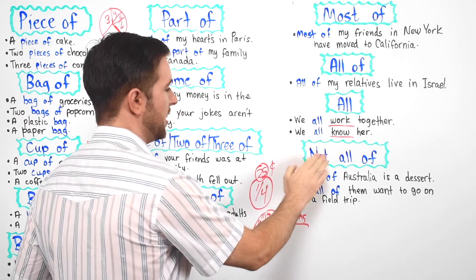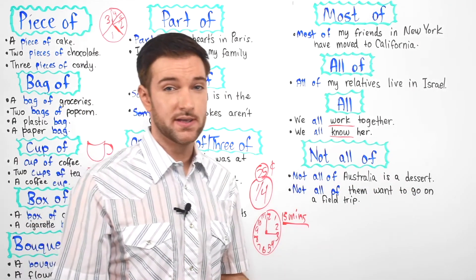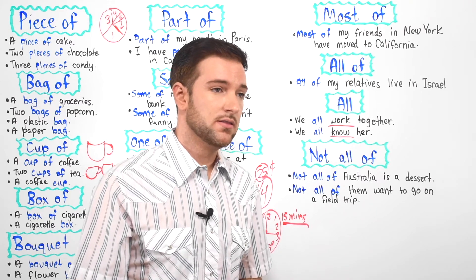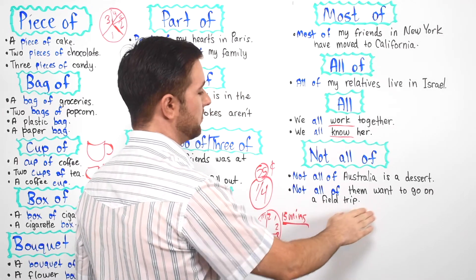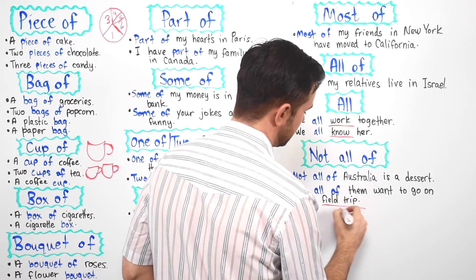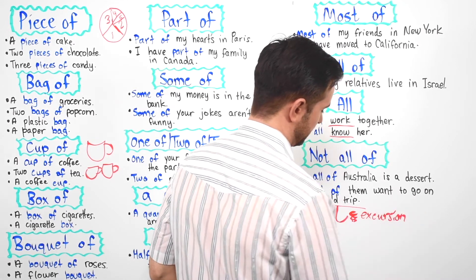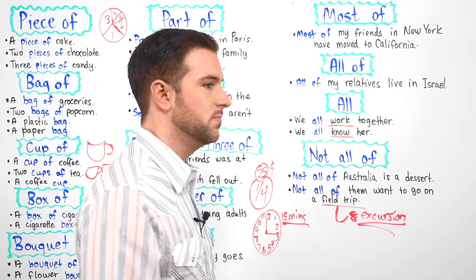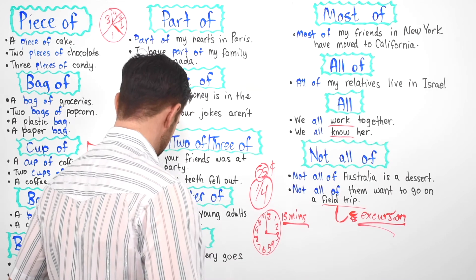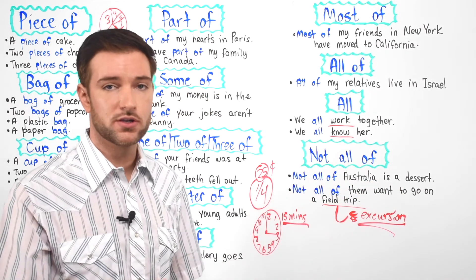And finally we have "not all of." Not all of Australia is a desert. A desert is an area where there is no rain or very little rain — for example, the Sahara Desert, the Mojave Desert in California, the Gobi Desert. Not all of them want to go on a field trip. A field trip is the word we use in America, which means excursion — an excursion is a field trip. You'll hear both, but in America we say field trip. Not all of them want to go on a field trip, meaning some students in a class don't want to go.